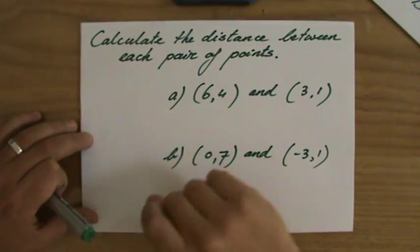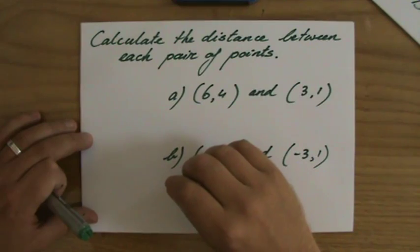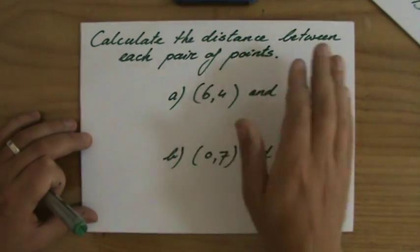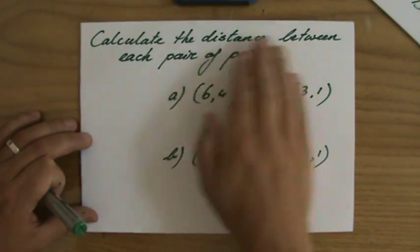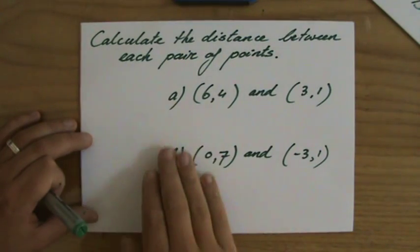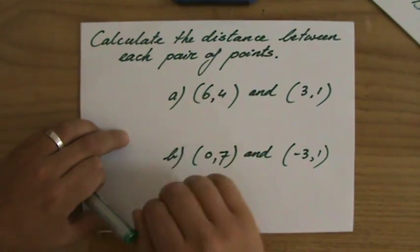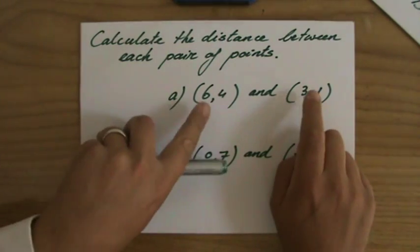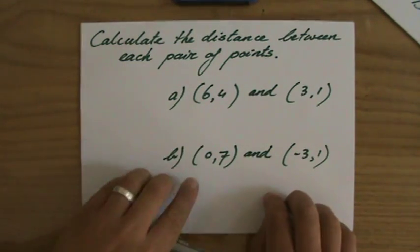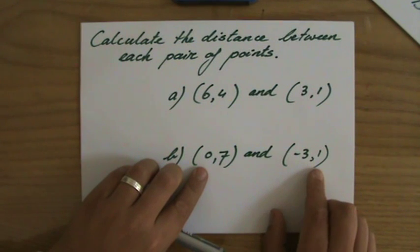Welcome back. I've explained how to find the length of a line segment, and now we're asked to calculate the distance between each pair of points. I've made two questions: question a) point (6,4) and (3,1), what is the distance between those two points? And the second question is point (0,7) and (-3,1), what is the distance of the line segment between those two points?